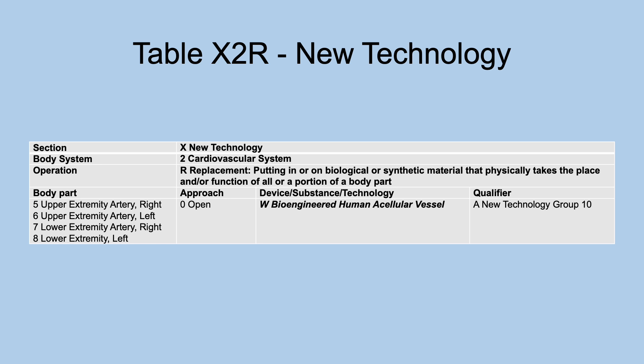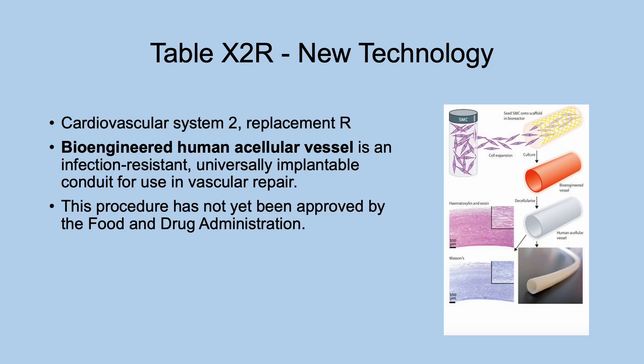Table X2R, new technology replacement procedure for upper extremity arteries — the new device is bioengineered human acellular vessel. This is an infection-resistant, universally implantable conduit for use in vascular repair, meaning you don't have to match it to the patient. This had not yet been approved by the Food and Drug Administration at the time these new codes were posted.